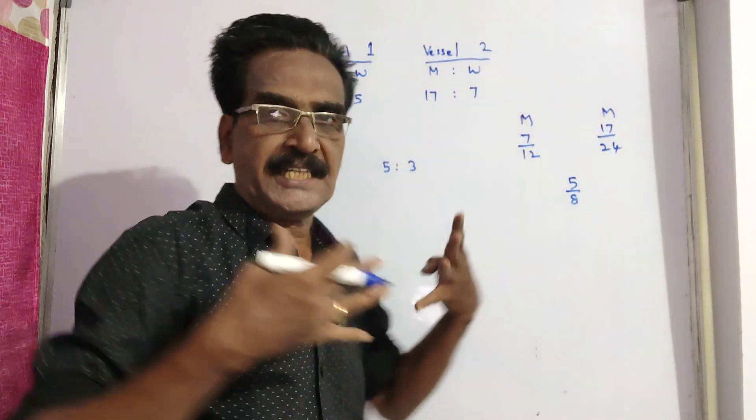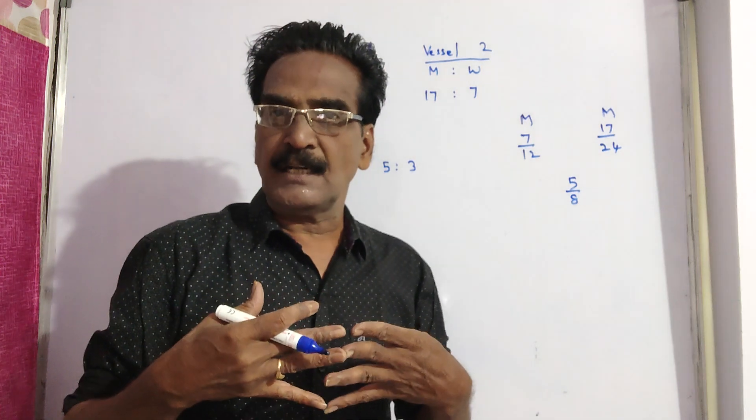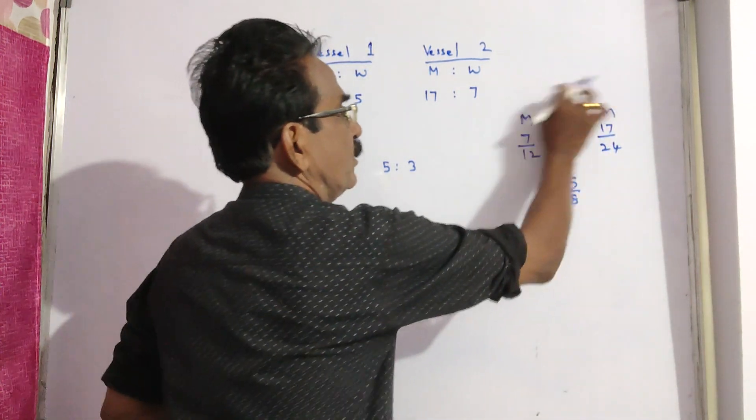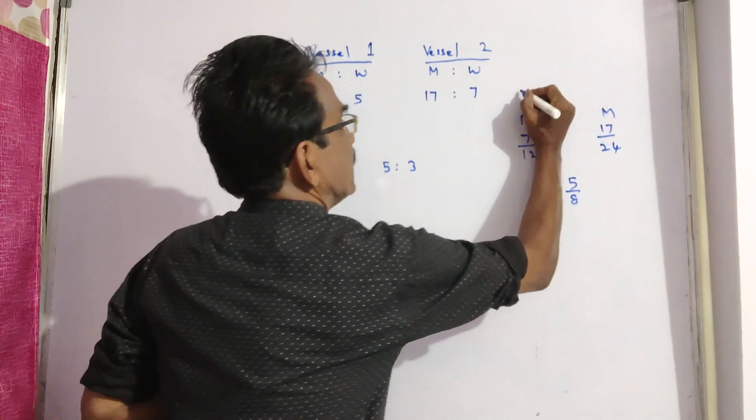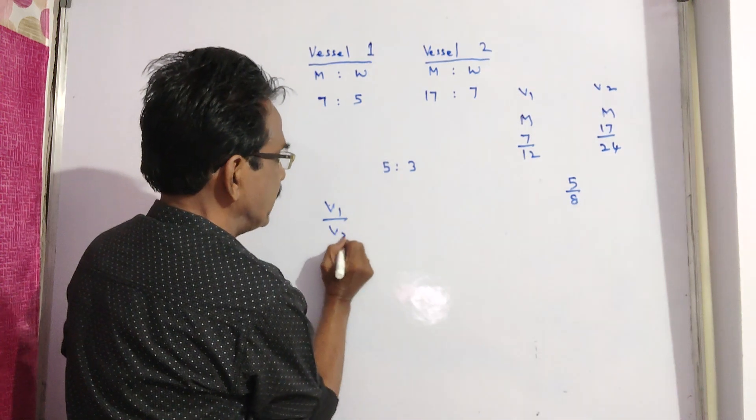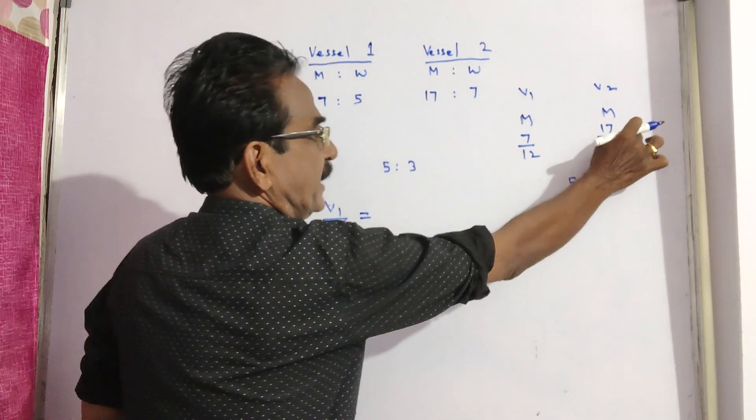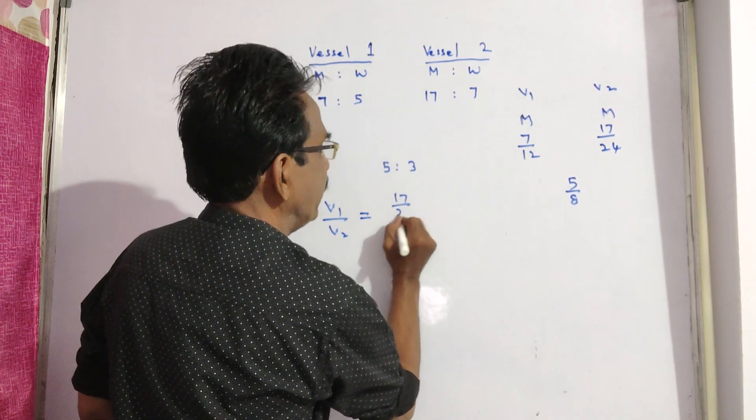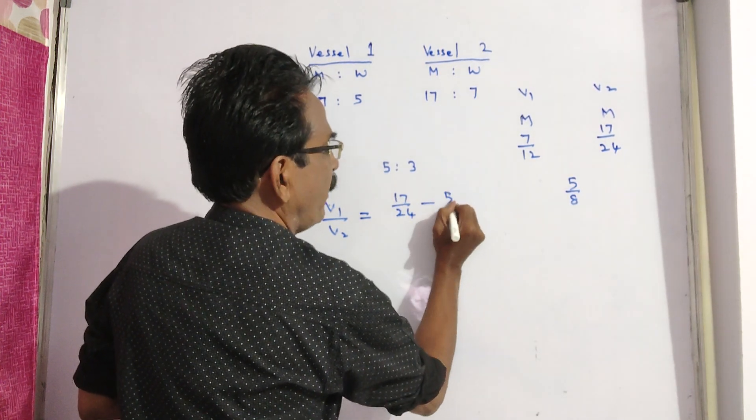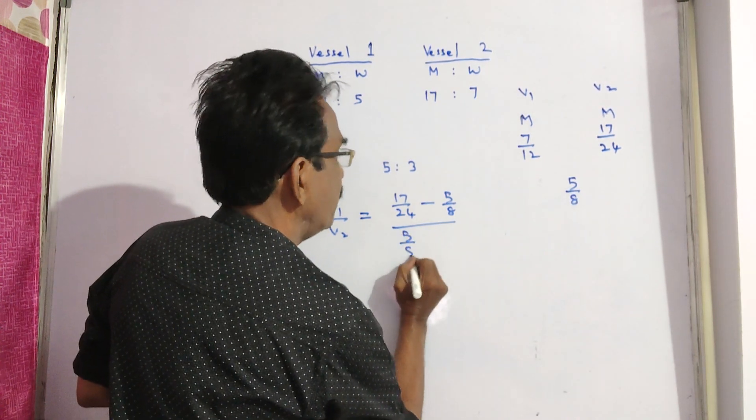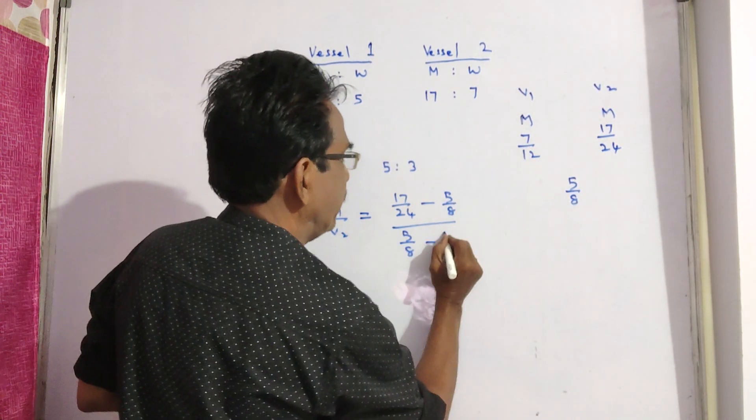So here two quantities are mixed. The ratio of these two quantities, that is vessel 1 to vessel 2, is obtained by this minus this, by this minus this: 17 by 24 minus 5 by 8, upon 5 by 8 minus 7 by 12.